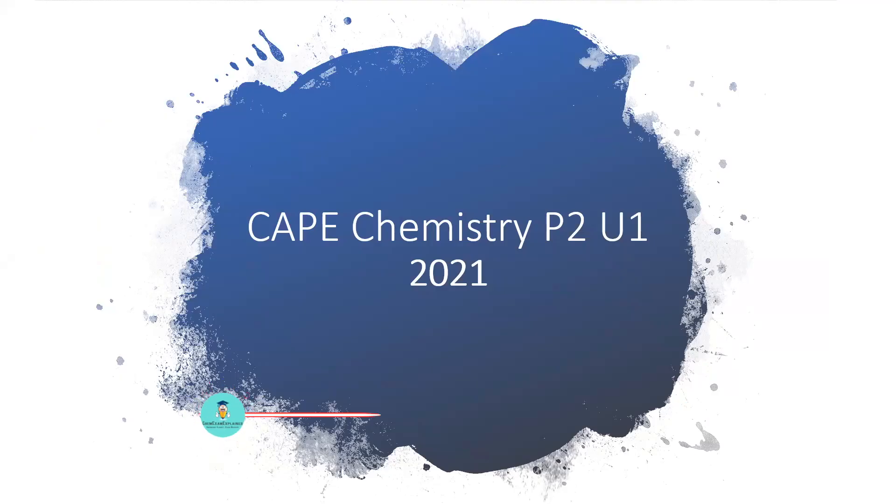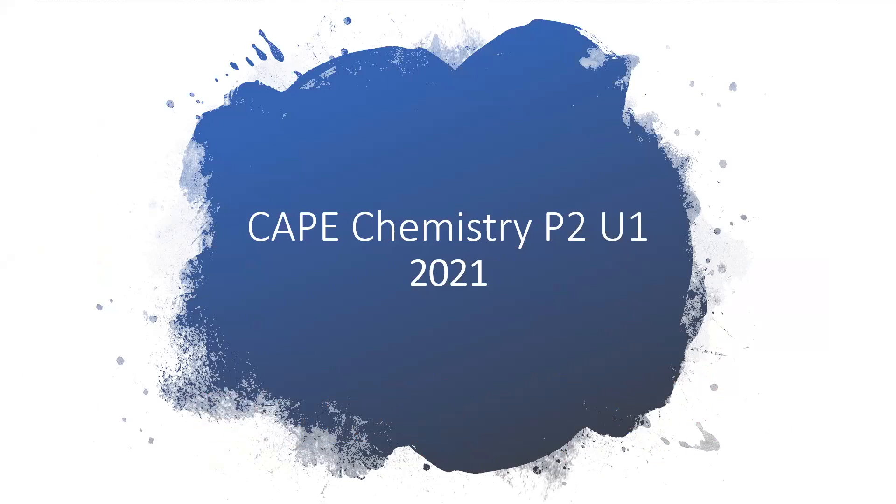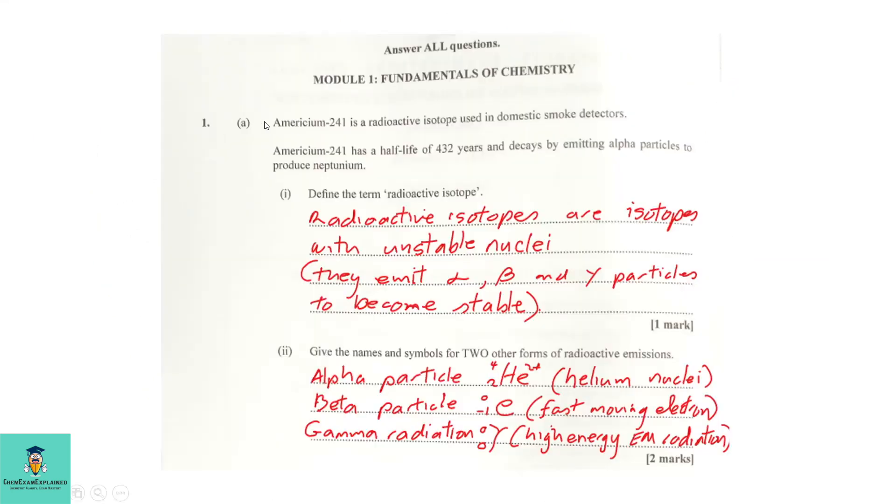Welcome back to ChemExamExplained, where the aim is chemistry clarity, exam mastery. In today's video, we will be looking at Cape Chemistry Unit 1, 2021, Module 1, Question 1, Part A.